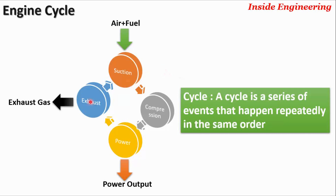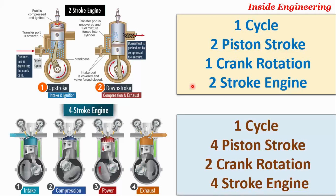Two-stroke or four-stroke engine segregation is based on how many piston strokes it takes to complete one engine cycle. In a two-stroke engine, one engine cycle is completed with the help of two piston strokes — that's why it's called a two-stroke engine.